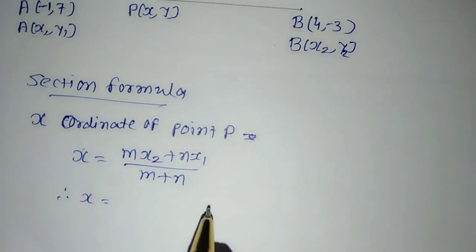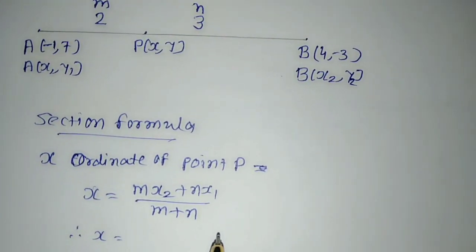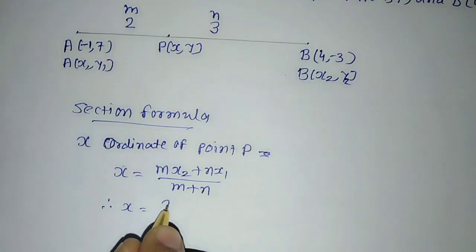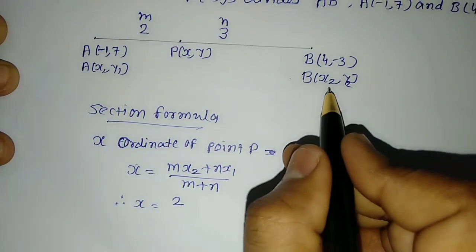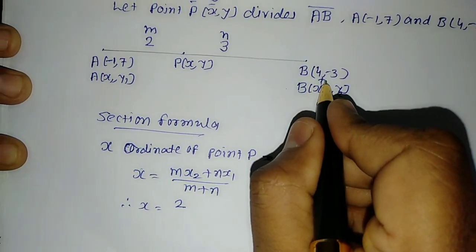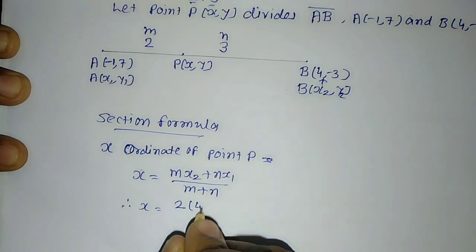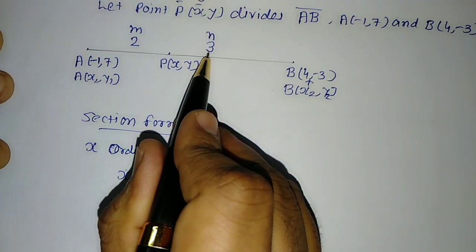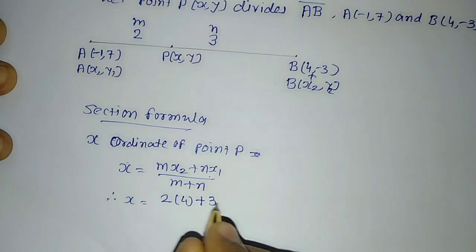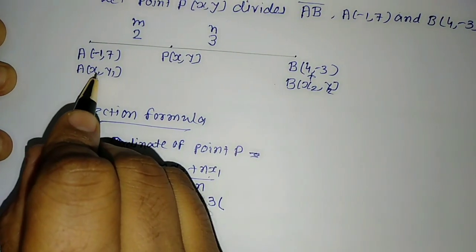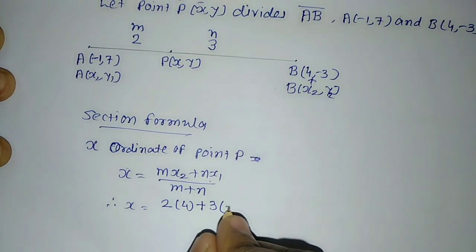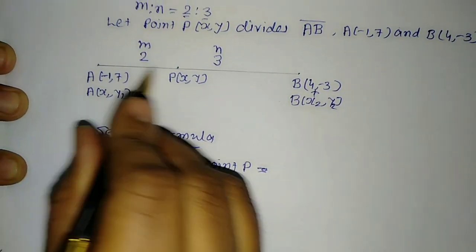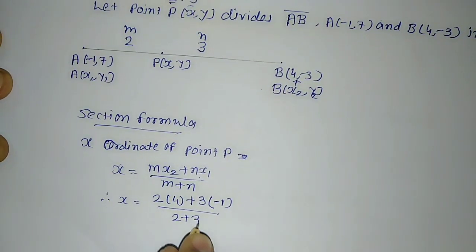In the figure you can see M = 2, X2 = 4, N = 3, and X1 = -1. So X = (2×4 + 3×(-1))/(2 + 3).